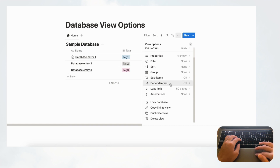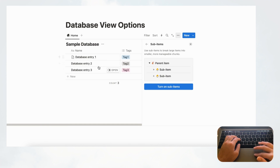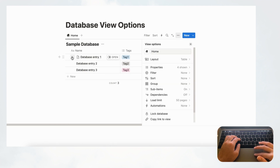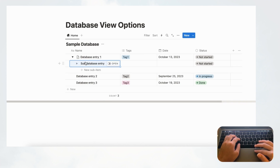Next are Sub-items. If you open sub-items, you'll see a diagram showing the parent item and its sub-items. For example, if a database entry is a task and you have subtasks underneath it, you can turn sub-items on. This adds an arrow to the entry and lets you add sub database entries — a great way to track the hierarchy of tasks or entries.